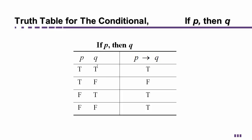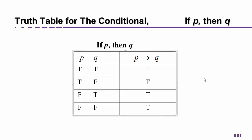We can make a truth table for the conditional and figure out when it is true or false. We set up our normal P's and Q's with T's and F's for all the various cases of when one is true and the other is false, and so on. You can see that the conditional is always true except for one case: it's only false if the first part is true and the second part is false. Basically, if the first thing happens and the second thing doesn't, then the conditional is false.